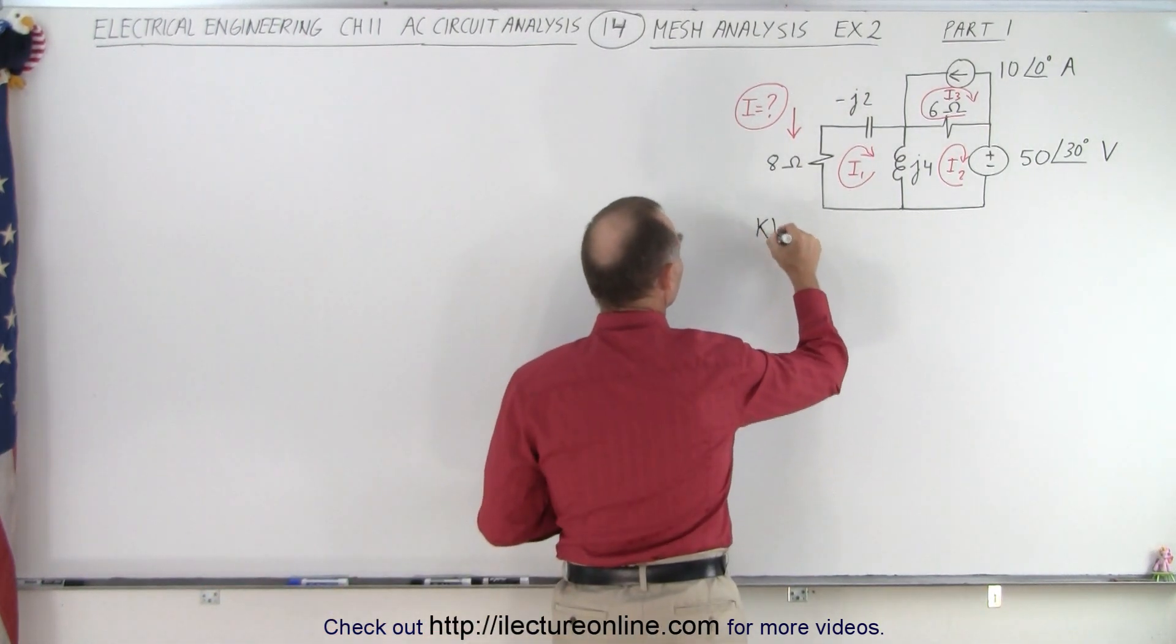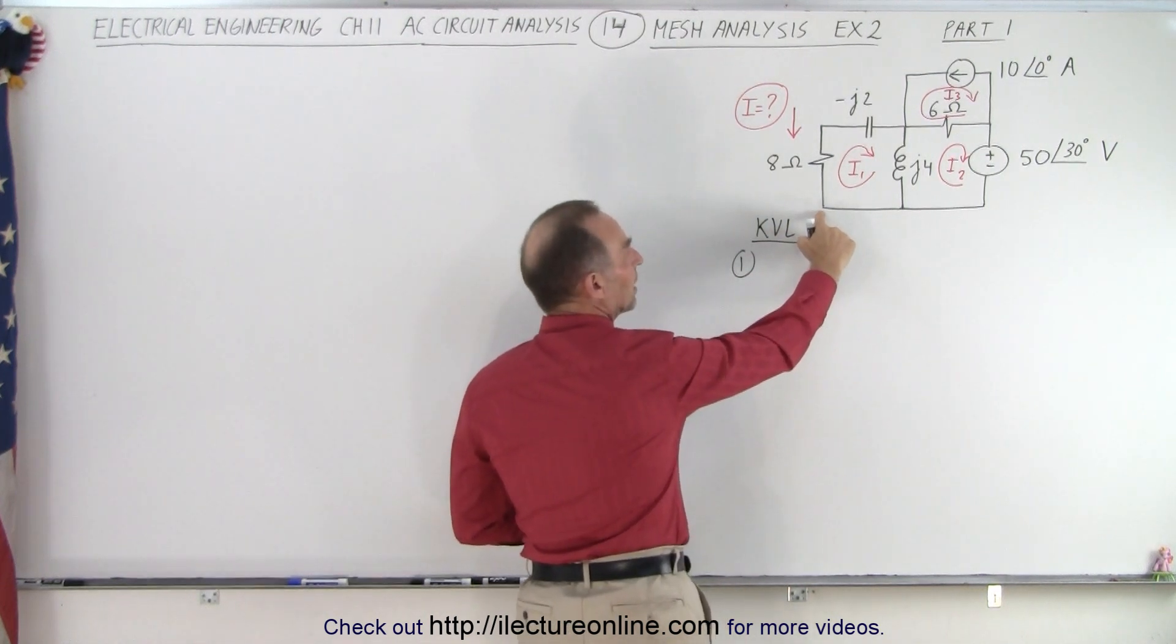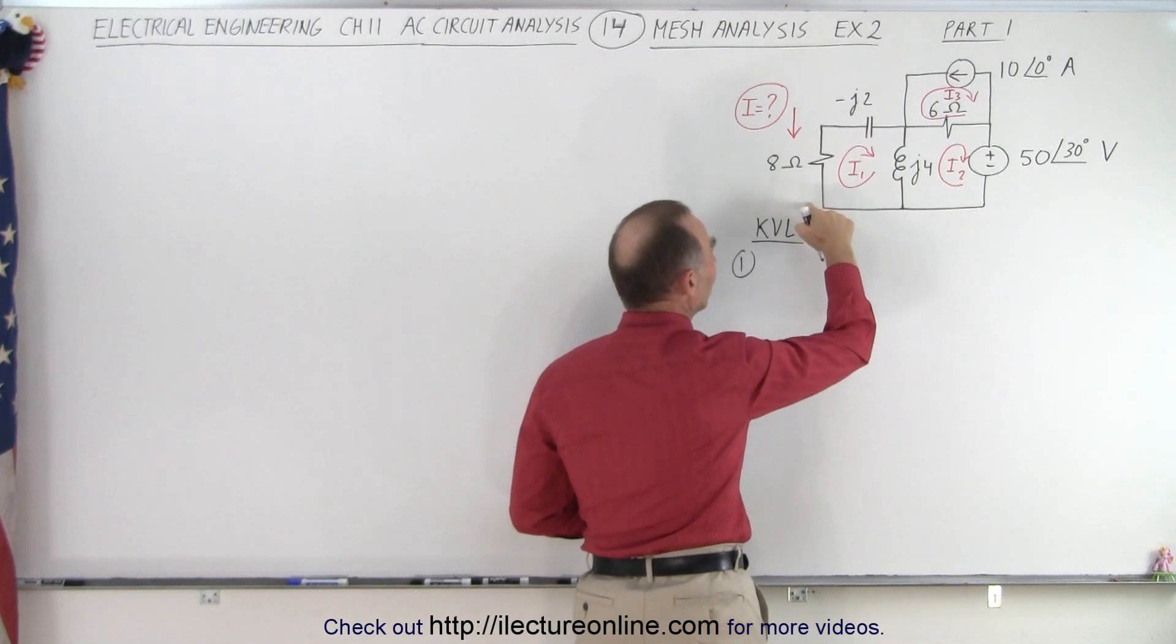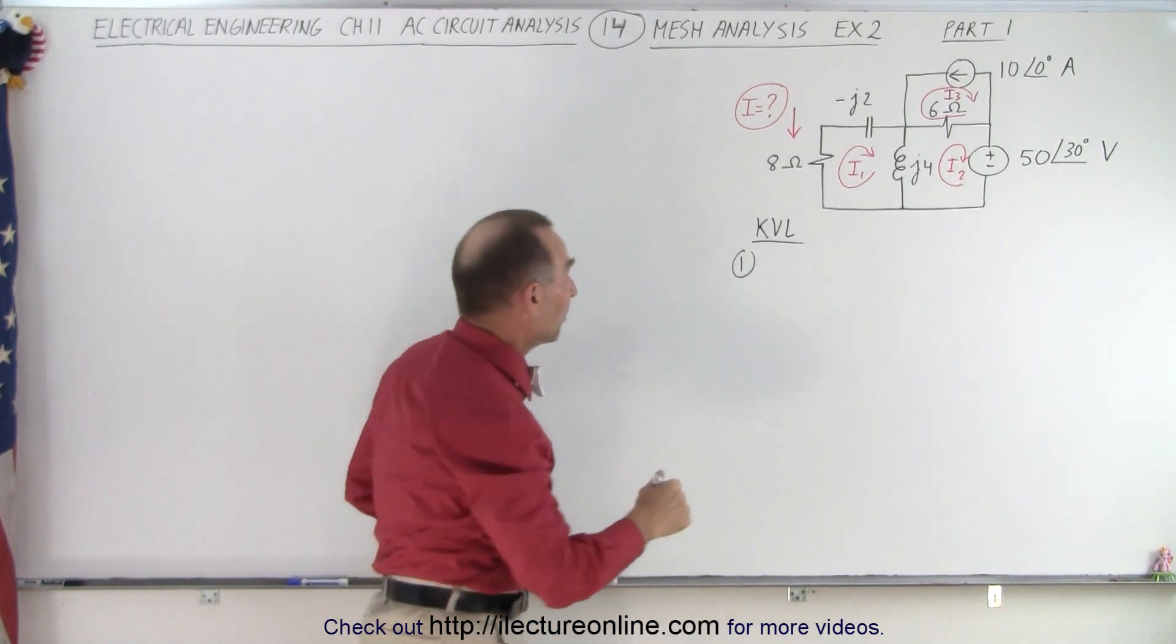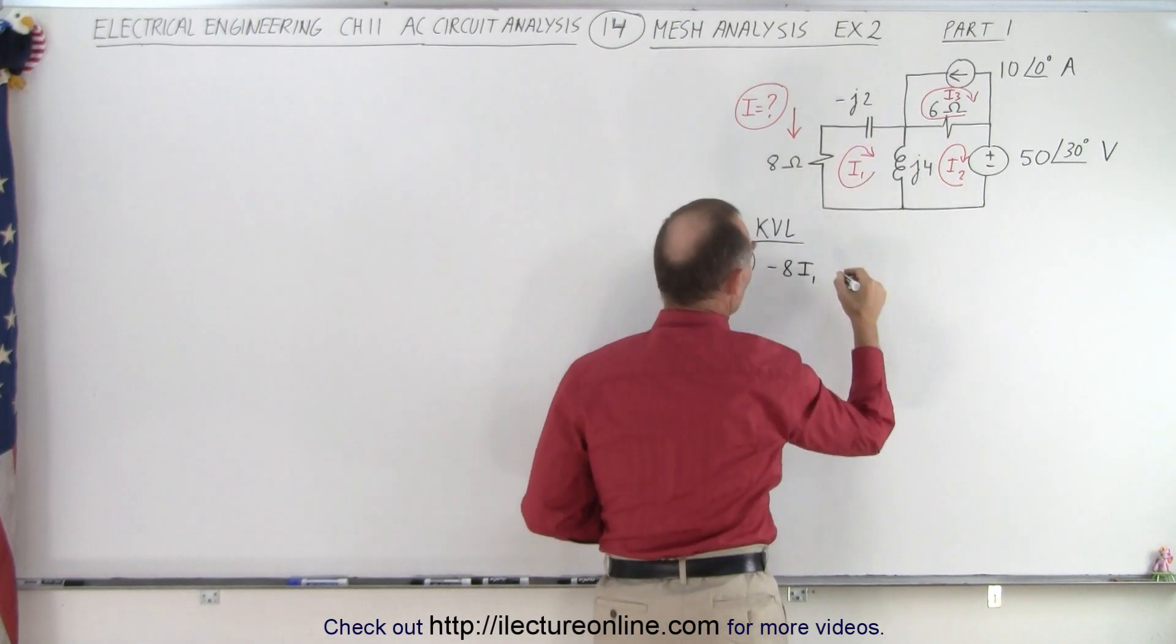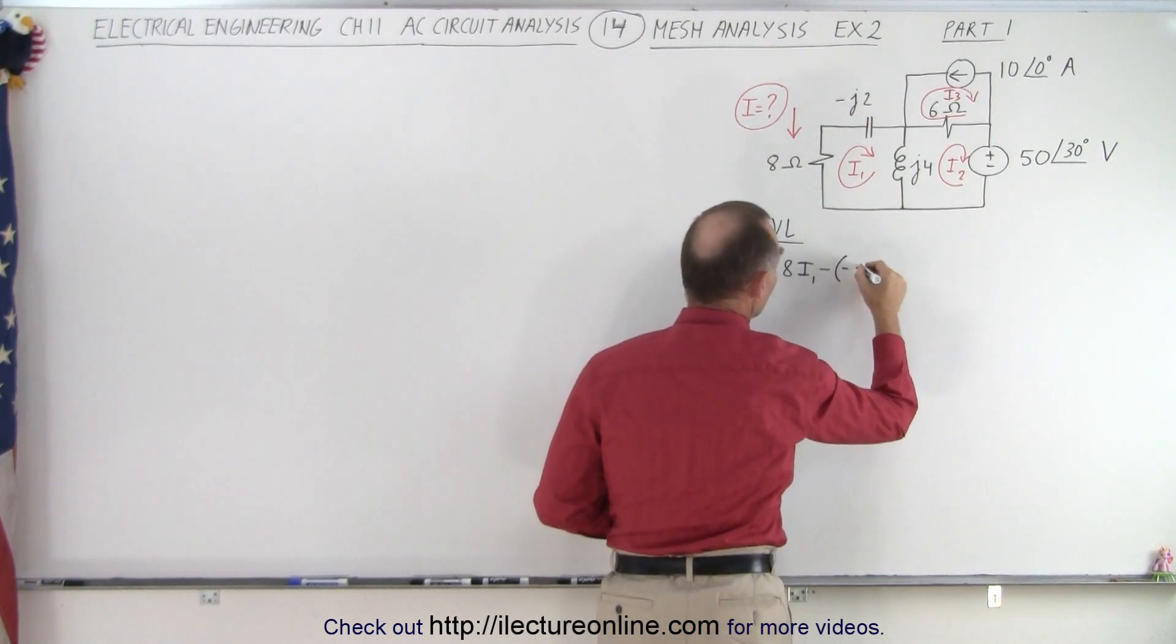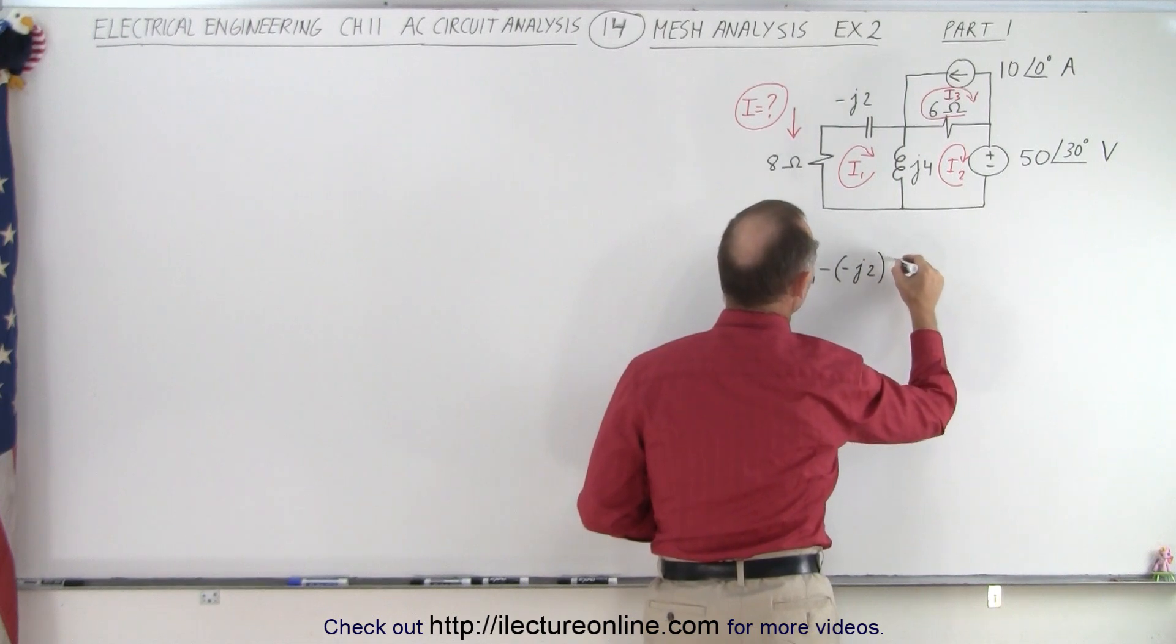Using KVL, let's go to mesh number one. Start at this corner right here. We're going to move around the circuit with the way the current is drawn, I1. Of course, whenever we go across a component we have a voltage drop. So on the first component right here we have a voltage drop, so it's minus 8 times I1. Here we have a voltage drop again, so minus, but keep in mind there's a minus J2 because it's the reactance of the capacitor, and that would also be I1.